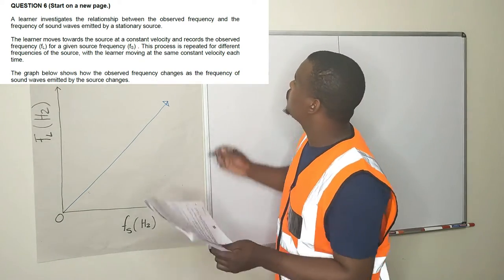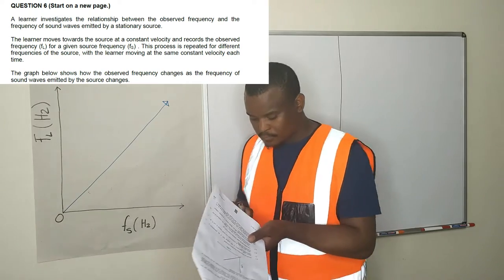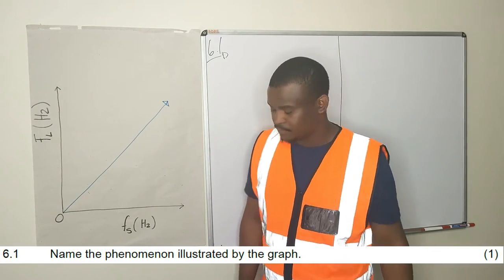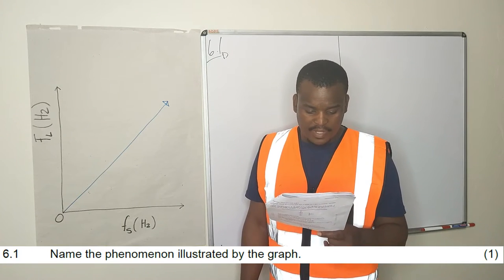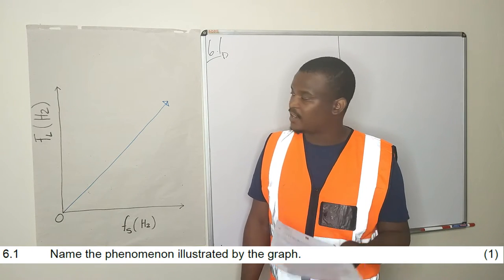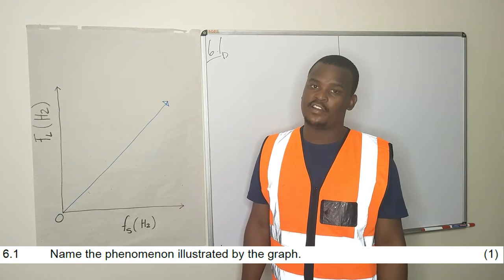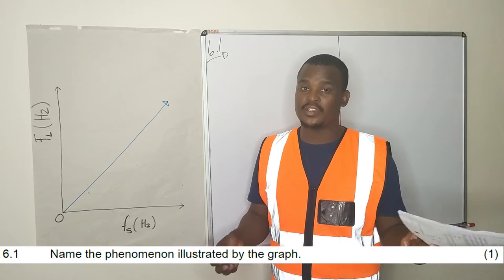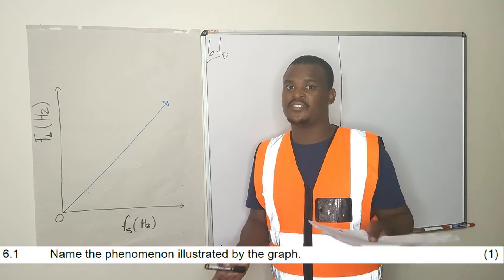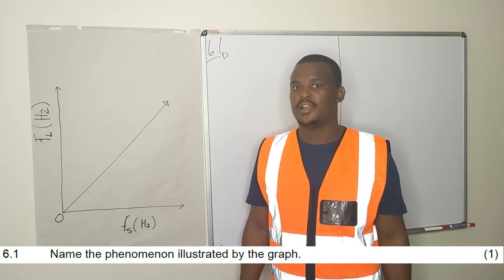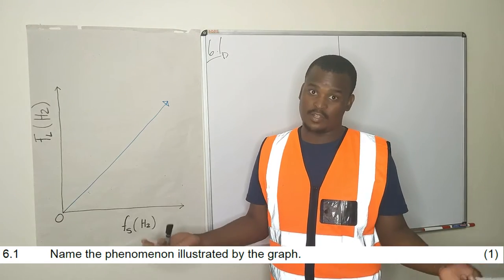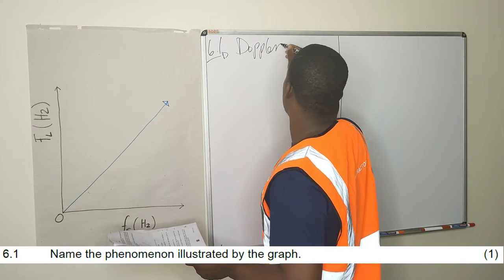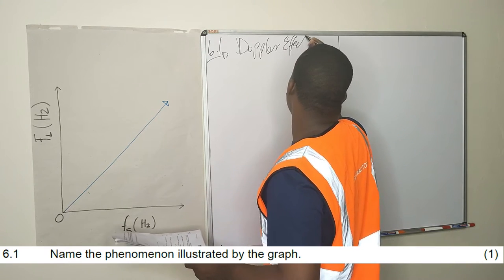Let's go to 6.1. Name the phenomenon illustrated by this graph. This phenomenon is the Doppler effect — the observed change in frequency of a sound due to the velocity difference between the source of sound and the listener or observer. So this graph is illustrating the Doppler effect.